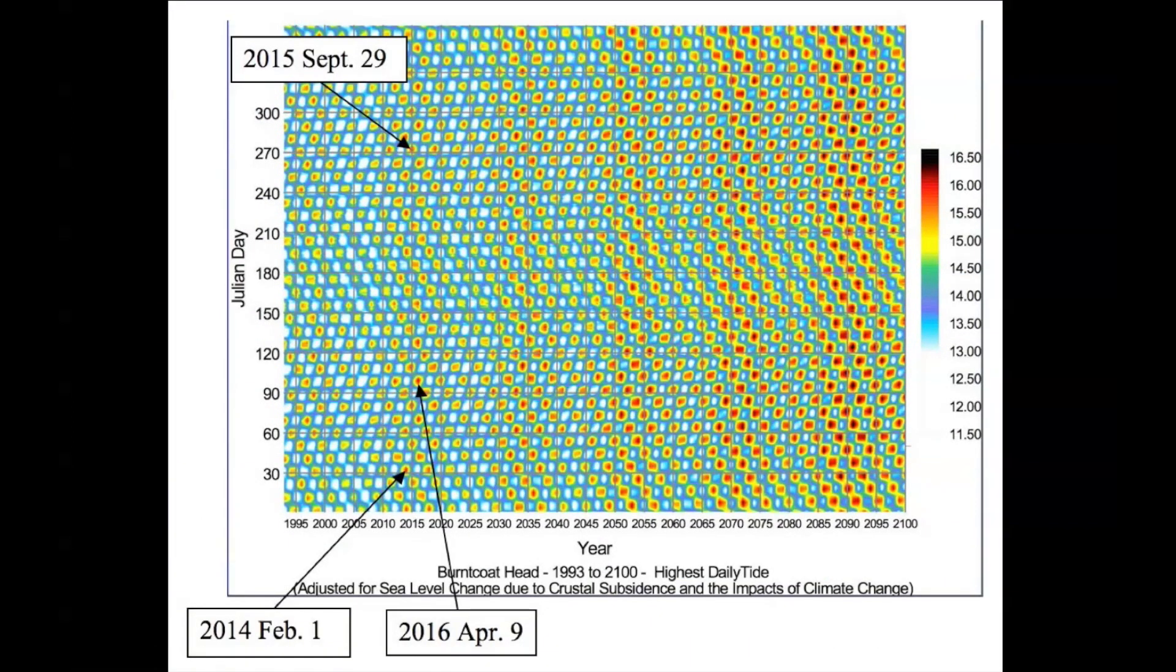Same chart, and I just put arrows on. That dot right there is the picture I showed a year ago, February the 1st, the dyke picture with the tide near the top. There is the one for this September, and there is the one for next April. So they show up very nicely.